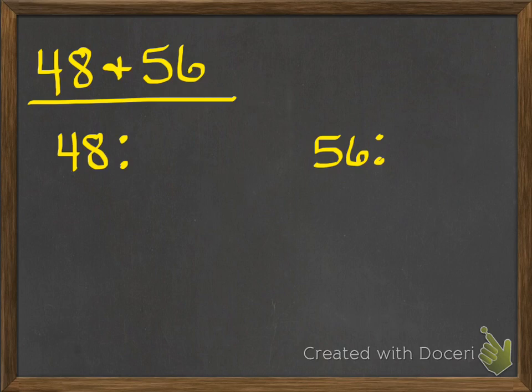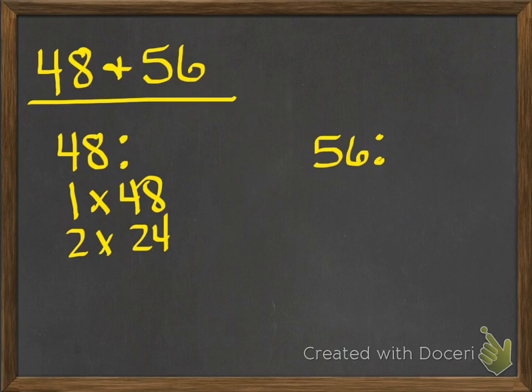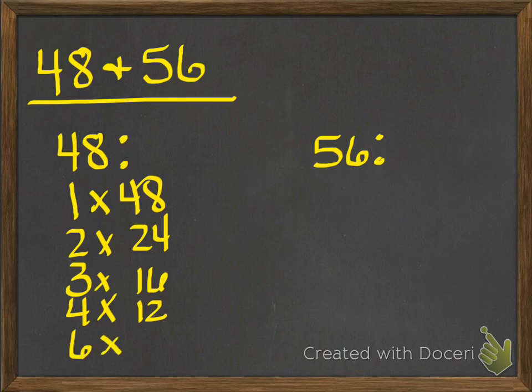The factors of 48 would be 1 times 48, 2 times 24, 3 times 16, 4 times 12, and 6 times 8. Those are all the factors of 48.